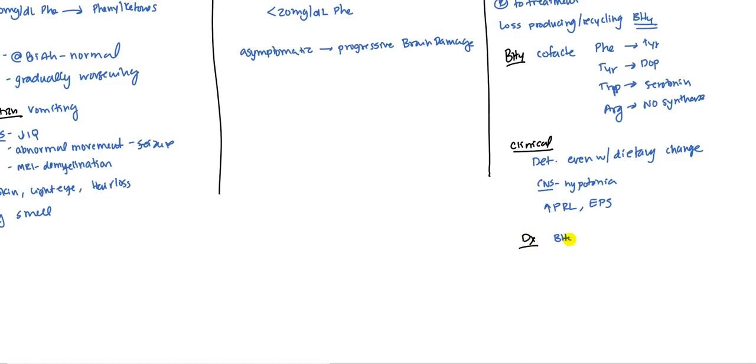It's called the BH4 loading test. So what you do here is you give the patient 20 milligrams per kilogram of BH4. And then you measure the phenylalanine level. And if it normalizes within four to eight hours, then it means the problem is with BH4. If it doesn't normalize, then it's probably not the issue.